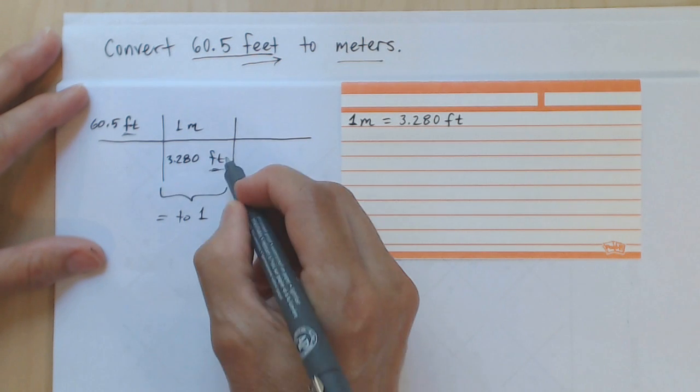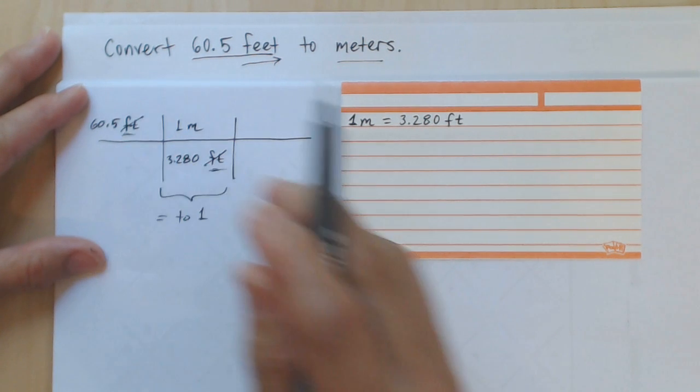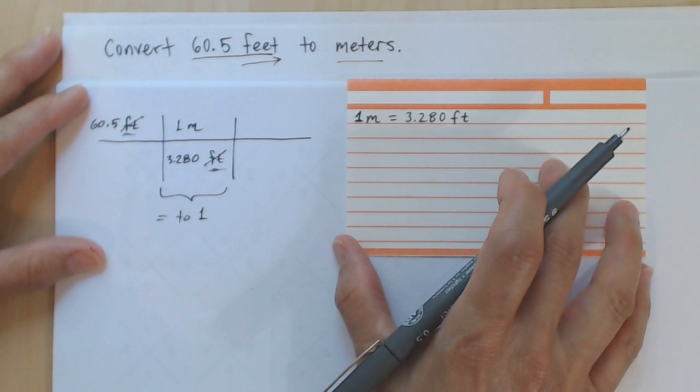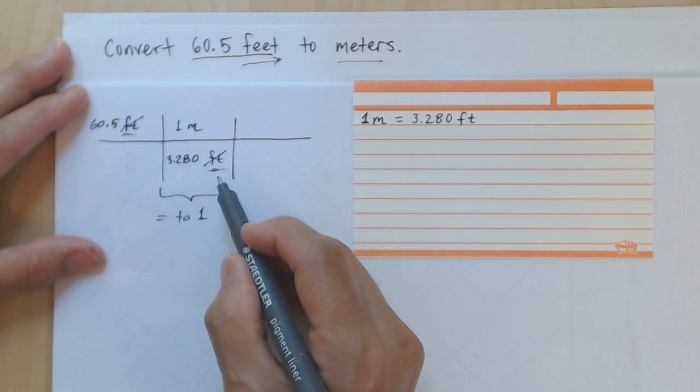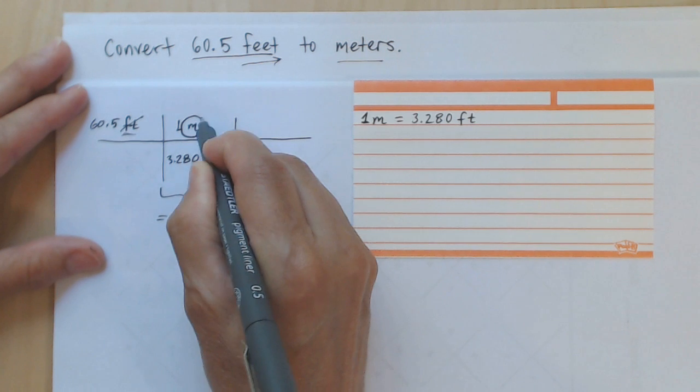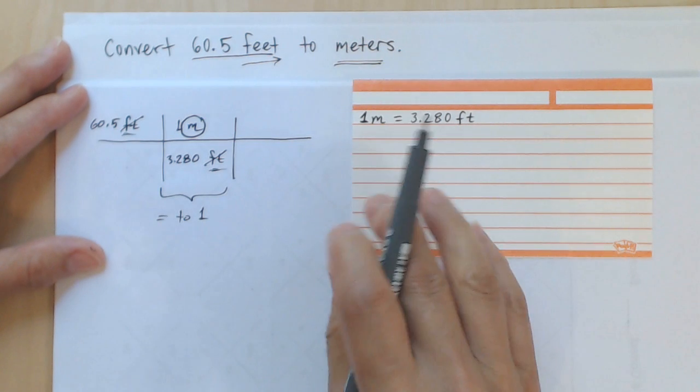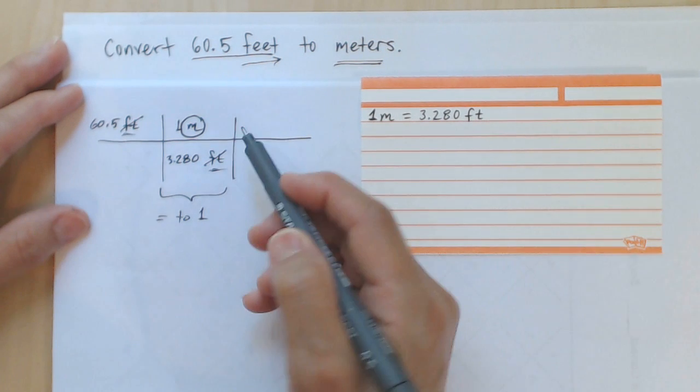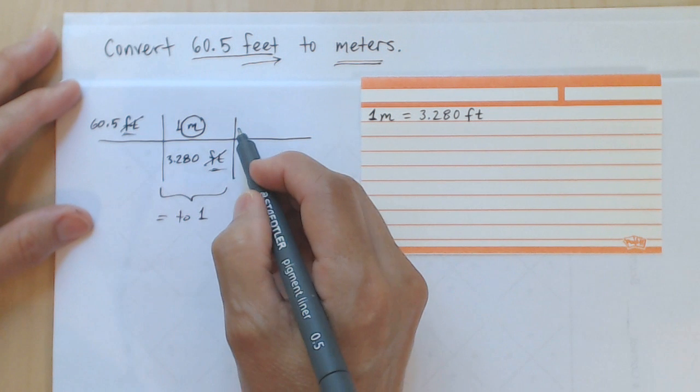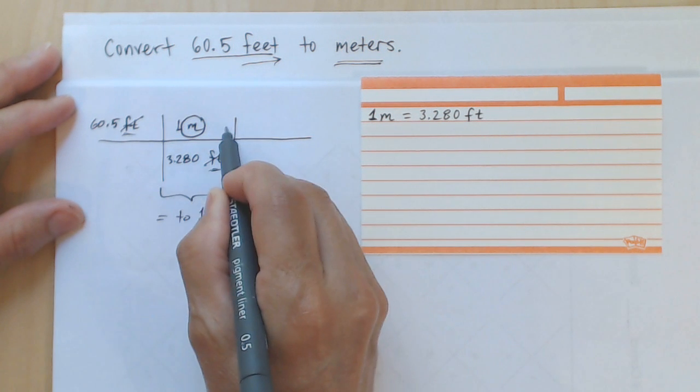These indeed are the units that are going to cancel, so I'll just write them being canceled out. When I've canceled everything that I can cancel and I'm left with the unit to which I am converting, meters, I'm done writing fence posts and I can just go ahead and multiply across through the numerator.